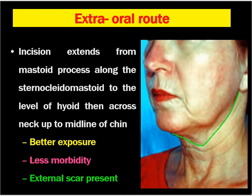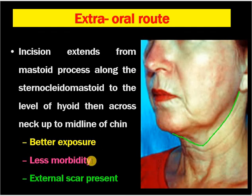The styloid process can also be excised from the extraoral route through the neck. In this technique, the incision extends from the mastoid process along the sternomastoid muscle to the level of the hyoid bone and across the neck after the midline of the chin — this incision is marked in green here. The advantage of this incision is it gives better exposure for the styloid process and is less morbid. The patient can take oral foods from the first or second postoperative day. The only problem is it gives an external scar, which many females may not prefer. However, the extraoral route provides better access than the intraoral approach. Complications are more likely with the intraoral route than the extraoral route.